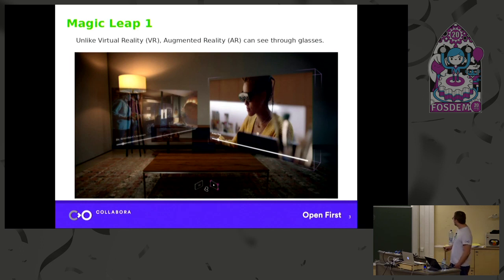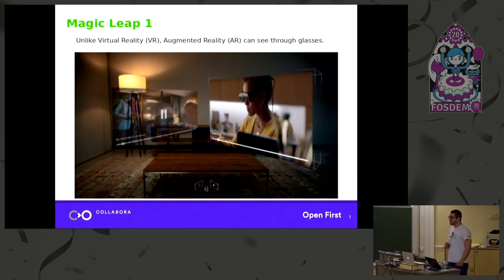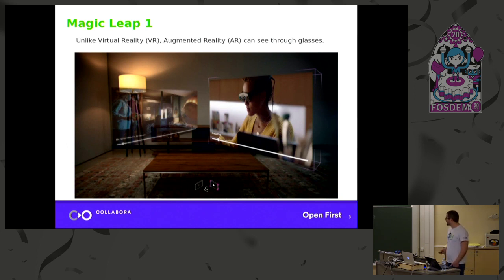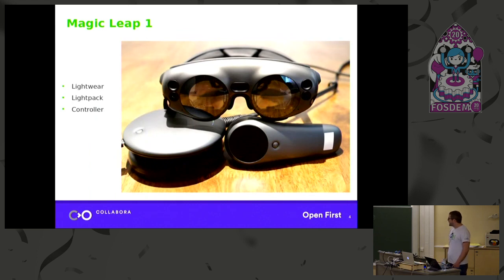For example, you can add a TV screen on the wall in your living room and watch TV like that with the glasses. That's not the same thing as VR, because virtual reality is a completely opaque device — you can't see anything from the real world, you see only a virtual environment.